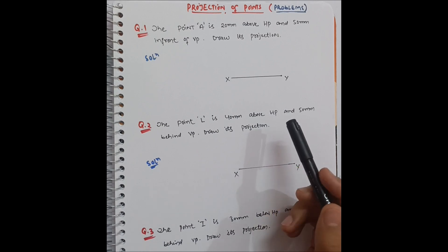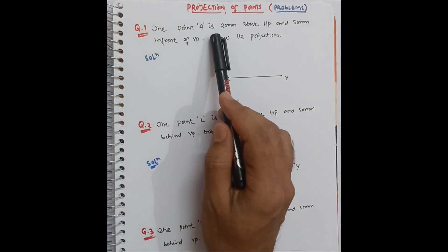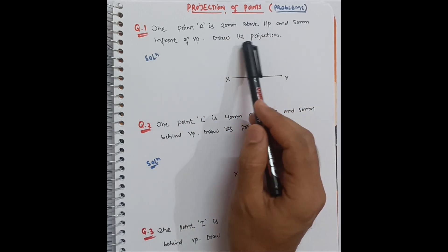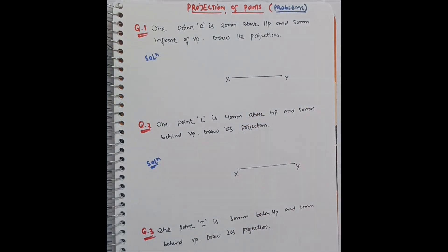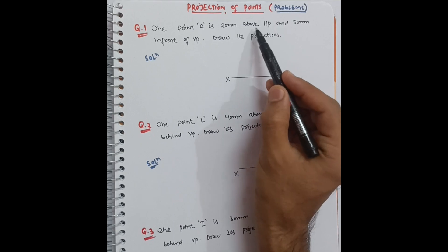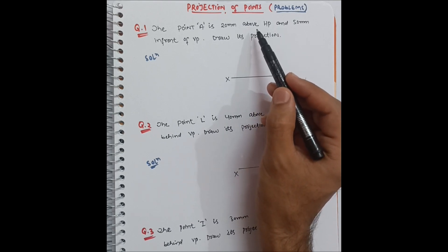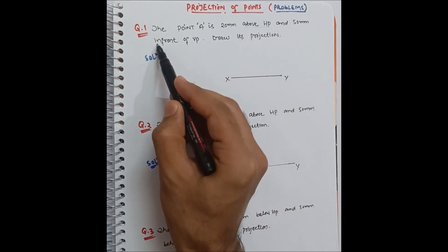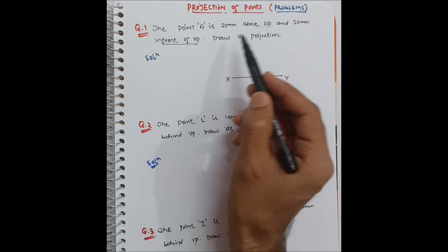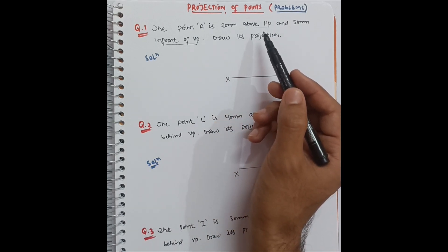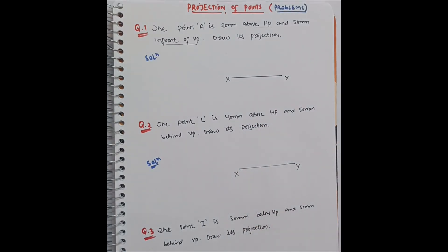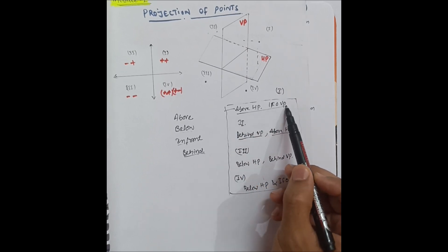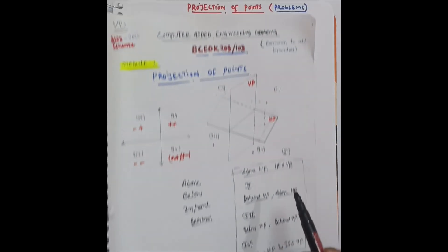The first question: Point A is 20mm above HP and 50mm in front of VP. Draw its projection. First you should know these terminologies — 'above HP' and 'in front of VP' — and in which quadrant the point lies. These are the important terms to underline: 'above HP' and 'in front of VP'. As I discussed in the earlier class, this is a first quadrant problem.